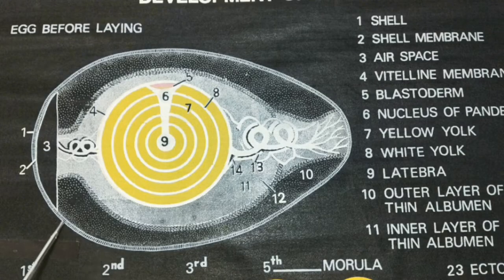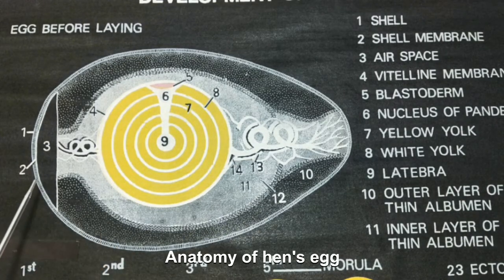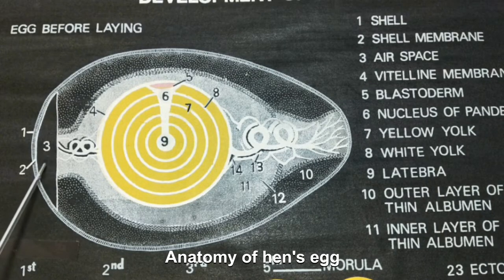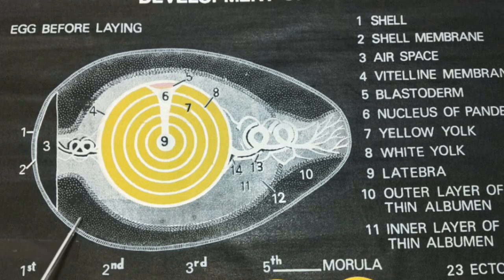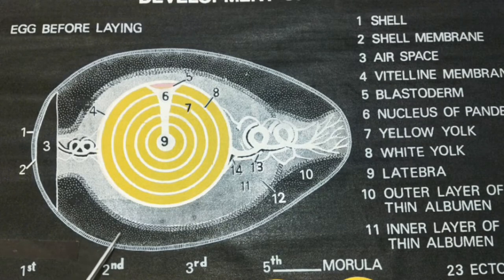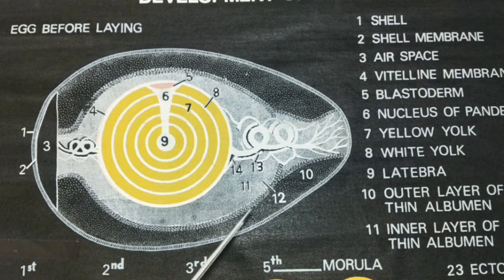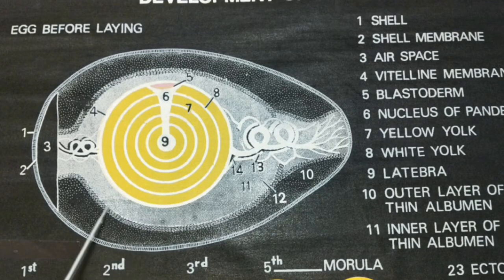Next, we shall briefly recall the anatomy of hen egg. The outer layer is the shell, which gives protection to the embryo. Next, the inner shell membrane has an air space for respiration of the embryo. Next, the albumin has three layers: outer thin layer, inner thin layer, and middle thick layer of albumin. It is a storehouse of water and protects the embryo from mechanical and chemical injury.